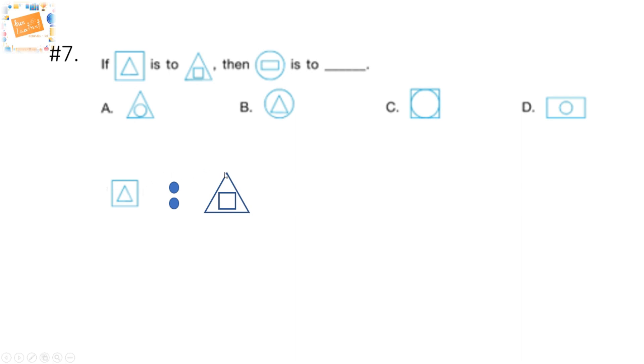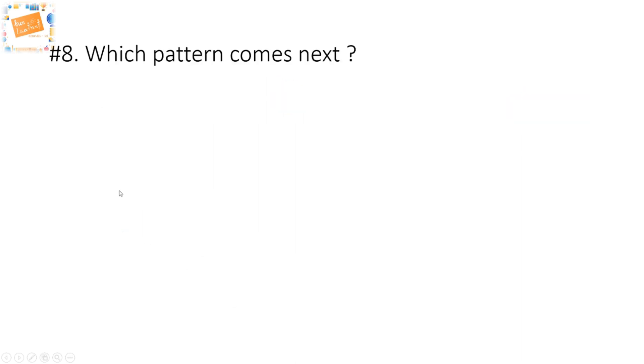So if the figure with the triangle inside the square is to a square inside the triangle, then this figure with the rectangle inside the circle should be the rectangle outside with circle inside, which if you look at these options is option number B.